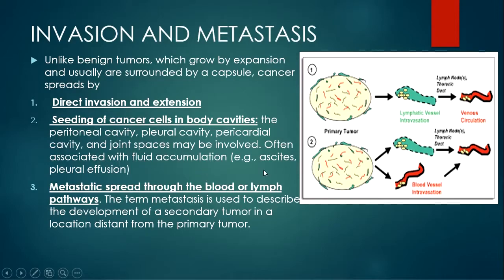For example, ascites is a fluid accumulation in the peritoneal cavity, while pleural effusion is a fluid accumulation in the pleural cavity. Lastly, metastatic spread can happen through the blood or the lymph pathways.